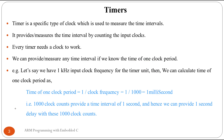First we'll understand the basics of timers and counters. A timer is a specific type of clock used to measure time intervals. It is also used to generate certain known or desired delays, which can be used to generate different frequencies. It measures time intervals by counting input clock pulses, so a timer requires clock pulses to operate — without a clock, a timer will not work.